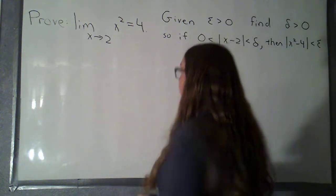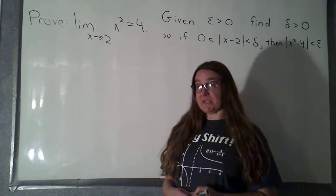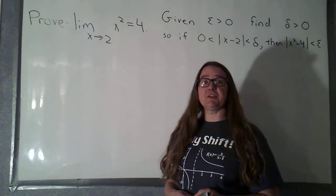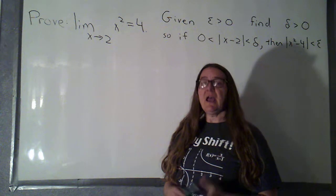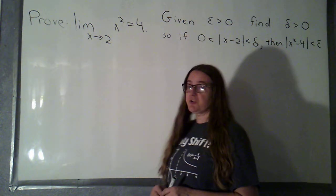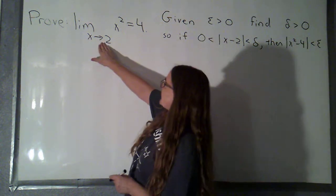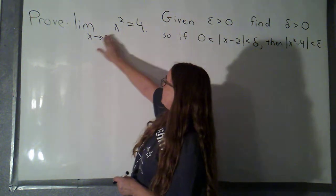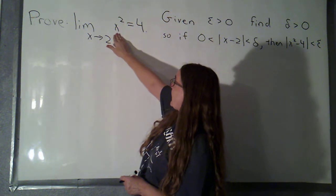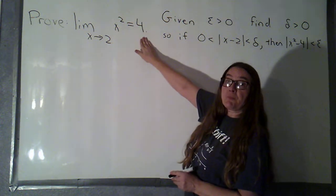In this video, we're going to take a look at using the formal epsilon-delta definition of a limit and applying that to a quadratic function. So we're going to prove that the limit as x approaches 2 of x squared is equal to 4.